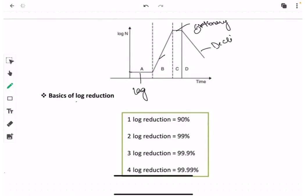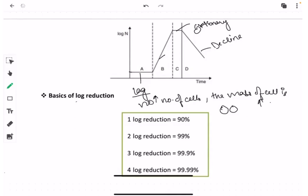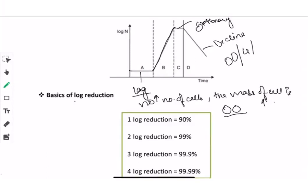D is known as the decline phase. In the lag phase, there is no increase in the number of cells — for example, if there are two cells present in the lag phase, they will remain constant until the log phase is achieved. In the log phase, the number of cells starts increasing: two to four, four to eight, eight to sixteen, and so on. In the stationary phase, the number of cells remains constant with time, whereas in the decline phase, the number of cells decreases with time.